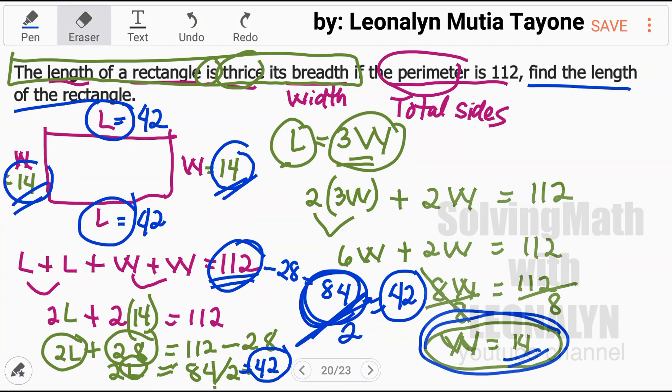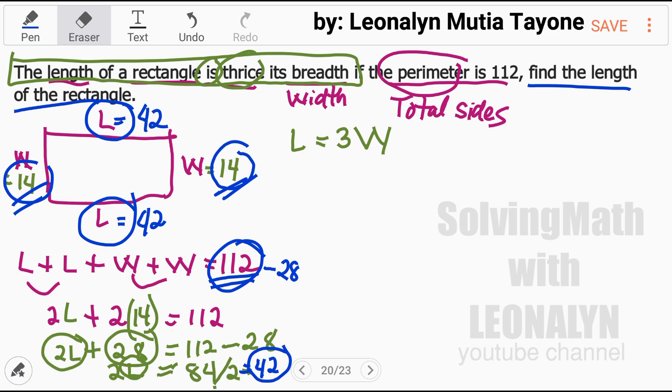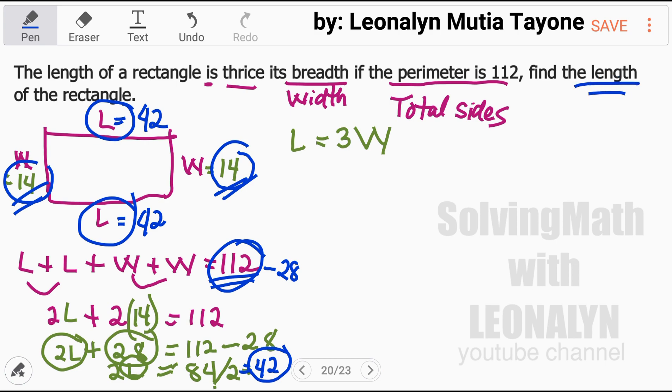Another way to solve this. Let me show you that there are many ways to get the correct answer. Now, what we're looking for here is the length itself. So this L equals 3W, what we'll do is this 3, since it's multiplying W, it divides L.